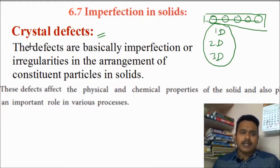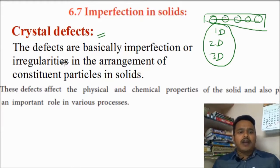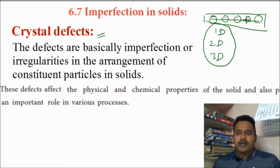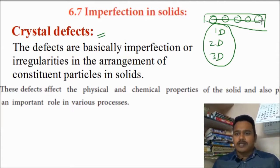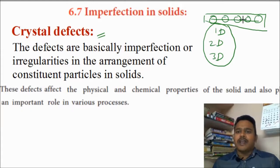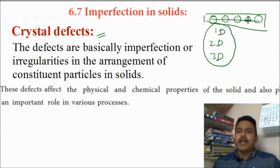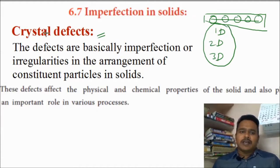The defects are basically imperfections or irregularities in the arrangement of constituent particles in the solid. In a solid, some atoms, some molecules, some ions are there. Those ions are not arranged in a proper way — there is an irregular arrangement. At that time, crystal defects are going to arise.